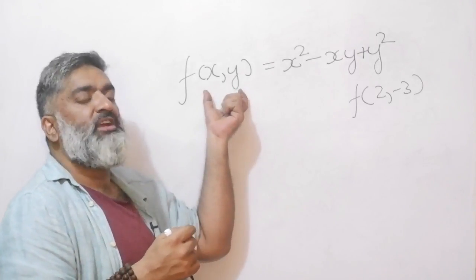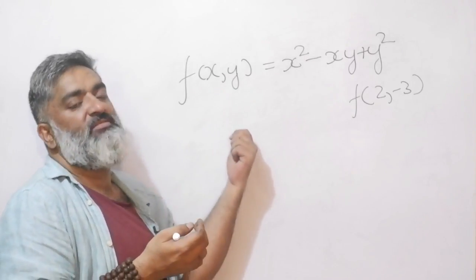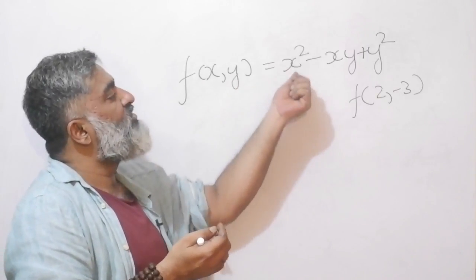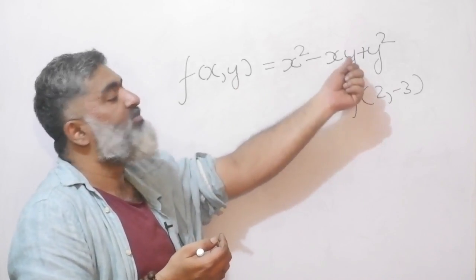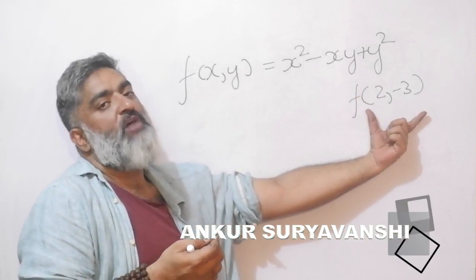Can the function have more than two variables? Yes, very easily. It is up to me or the real world problem that how many variables I have in the story. f of x comma y is equal to x square minus xy plus y square, and now I am saying find f of 2 comma minus 3.